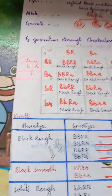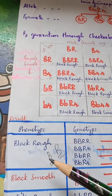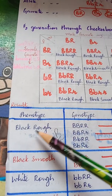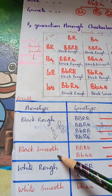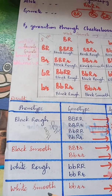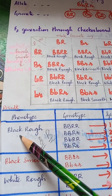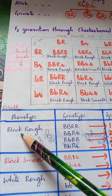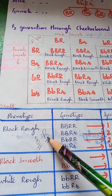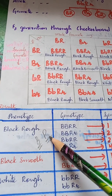There will be 4 different types of offsprings out of the 16. Some are black and rough guinea pigs, some are black and smooth, some are white and rough, and some are white and smooth. Whenever we see black, it is represented by the genotype capital B, and for rough it is capital R. So whenever you see capital B and capital R, it is black and rough.